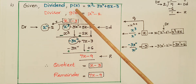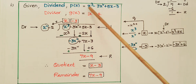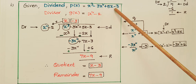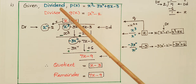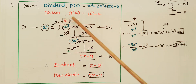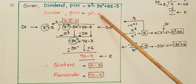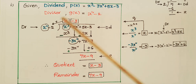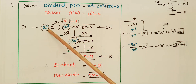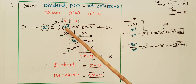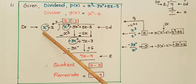The first problem: the dividend is p(x) = x³ - 3x² + 5x - 3, and the divisor is g(x) = x² - 2. Write the dividend here and the divisor here. Take the first term of the dividend, which is x³, and the first term of the divisor, which is x².